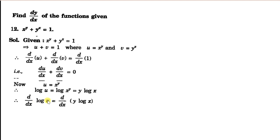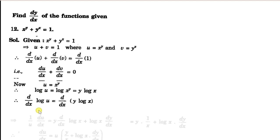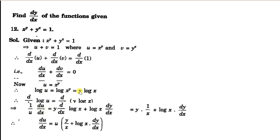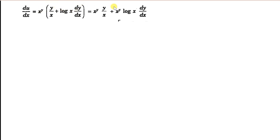The differentiation of log u gives 1 by u, and then du by dx. On the right hand side, we use the product rule: first function y as it is, times the derivative of the second function log x, plus the second function log x as it is, times the derivative of the first, that is dy by dx. It becomes y times 1 by x, because the derivative of log x is 1 by x, plus log x times dy by dx. Then transpose u to the right hand side and substitute x raised to y, giving x raised y times y by x plus x raised y times log x times dy by dx.